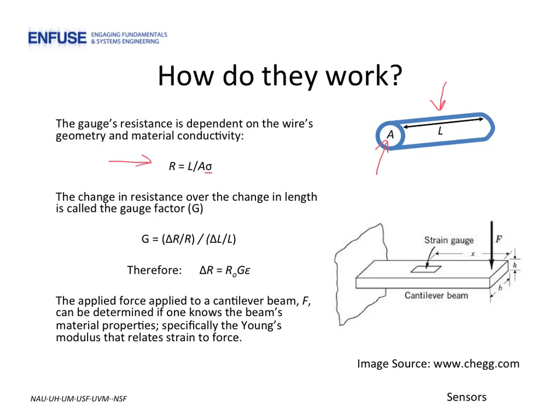When the bonded gauge undergoes tensile load, which causes it to be stretched, the overall length of the wire increases while the cross-sectional area decreases, as the volume must stay constant. The end result is that the resistance increases under tensile forces. Under compressive forces, the wire shortens and becomes thicker, and the resistance drops.